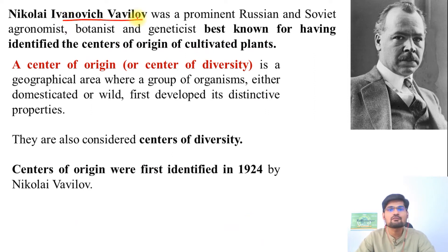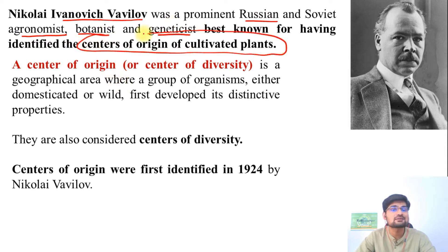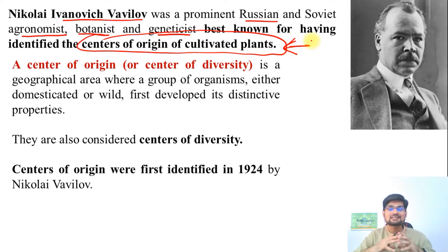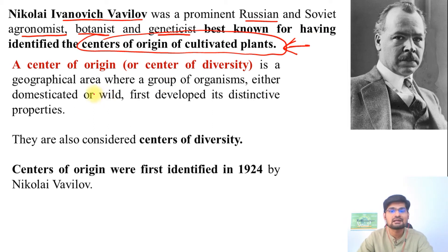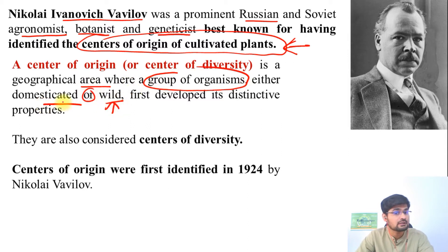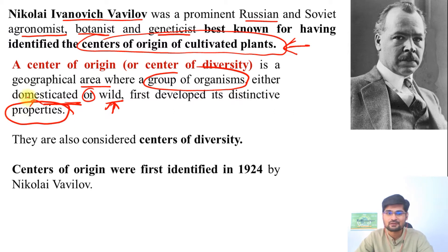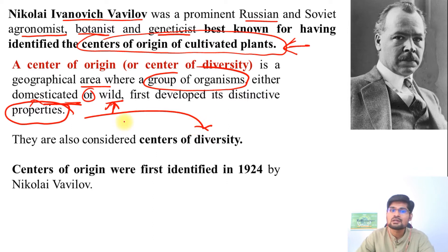Nikolai Ivanovich Vavilov was a prominent Russian and Soviet agronomist, botanist, and geneticist, best known for having identified the centers of origin of cultivated plants across the world. Being a botanist, he contributed to biogeography because he talked about locations, distributions, and the world map — that's why we study this in geography. Vavilov defined a center of origin, or center of diversity, as a geographical area where a group of organisms — domesticated or wild — first develops its distinctive traits or properties.